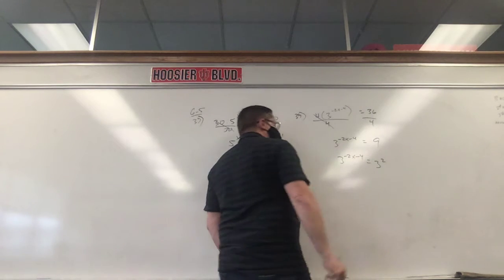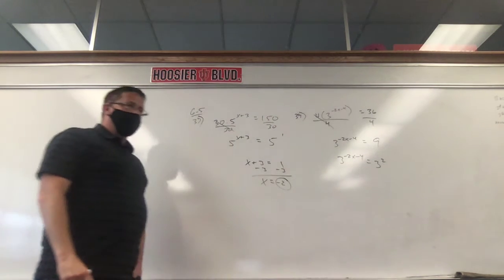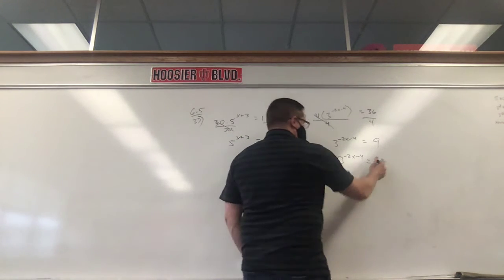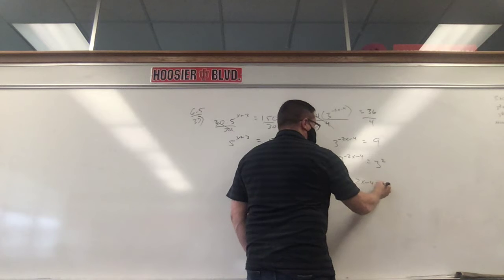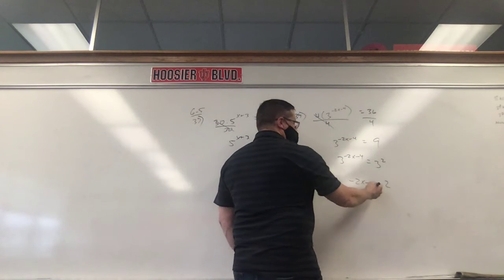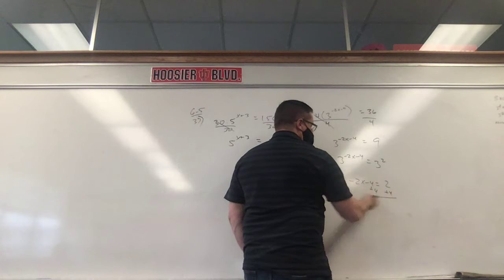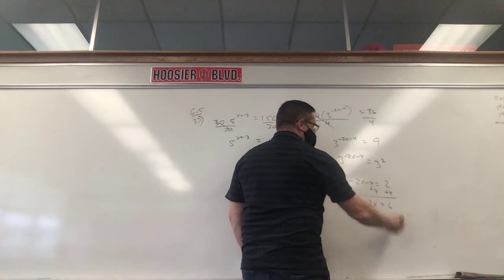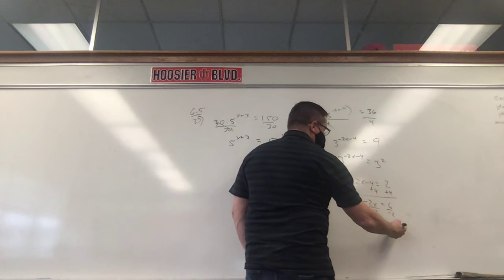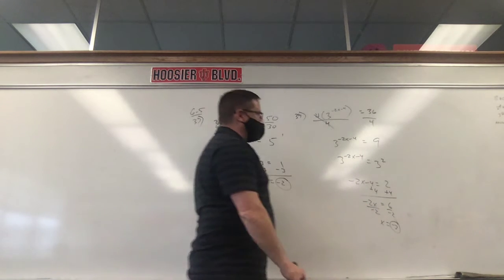And if we do that, it's nice because my bases are the same. So we ignore the bases, right? Just don't even look at them. We're going to put negative 2X minus 4 equals 2. The exponent has to equal the exponent. We add 4 to each side. Negative 2X equals 2 plus 4, which is 6. Divide by negative 2. X is 6 divided by negative 2, which is negative 3. So that was just a little bit tougher than the one we just did.